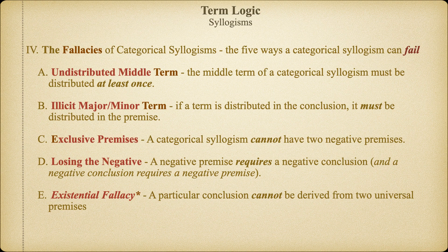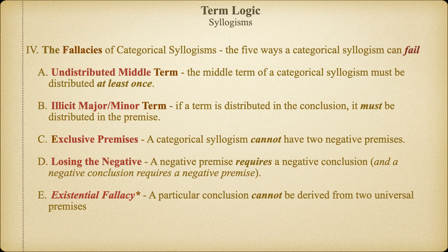That same distinction applies to categorical syllogisms. An argument with two universal premises cannot entail a particular conclusion unless we specify that the terms refer to actually existing things. From the Aristotelian point of view, a categorical syllogism with two universal premises and a particular conclusion is considered conditionally valid so long as the terms refer to actually existing things. From a Boolean point of view, these syllogisms would be invalid. This is what we call the existential fallacy.